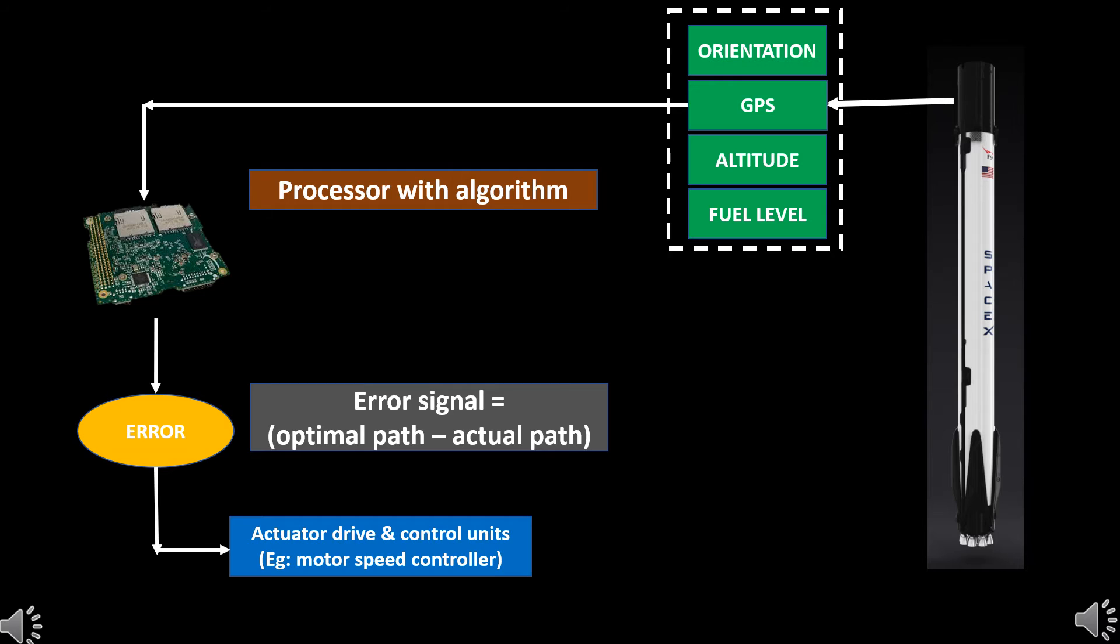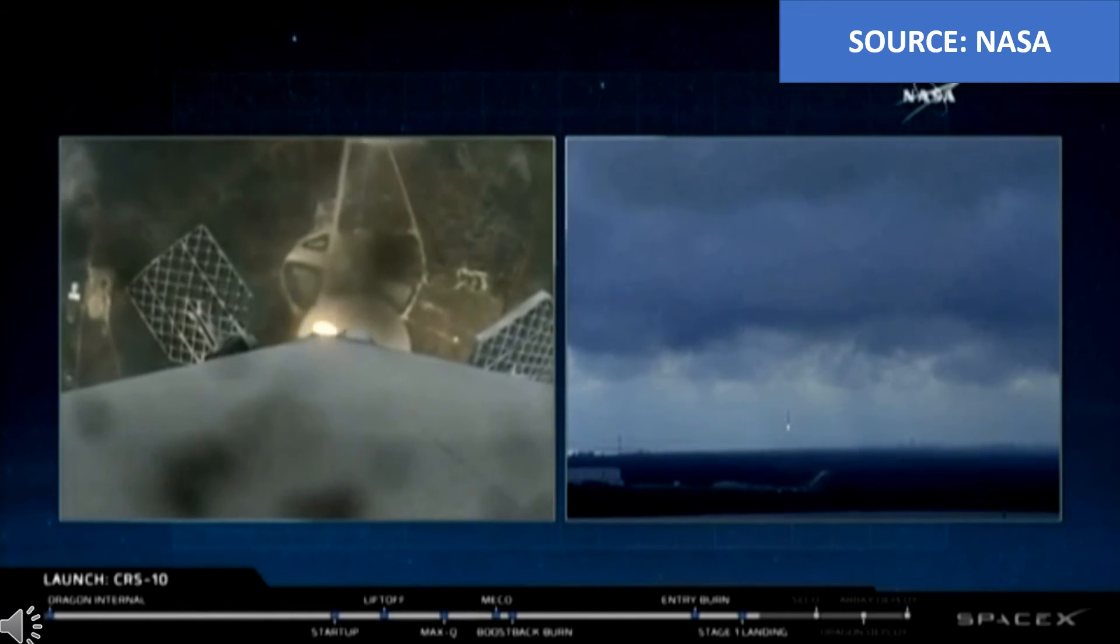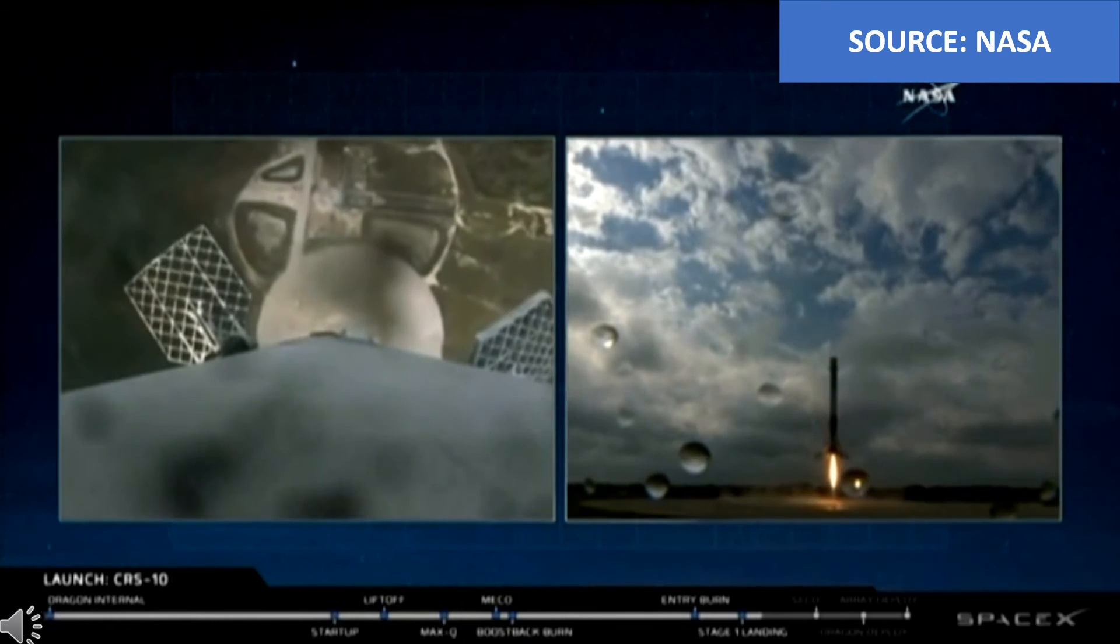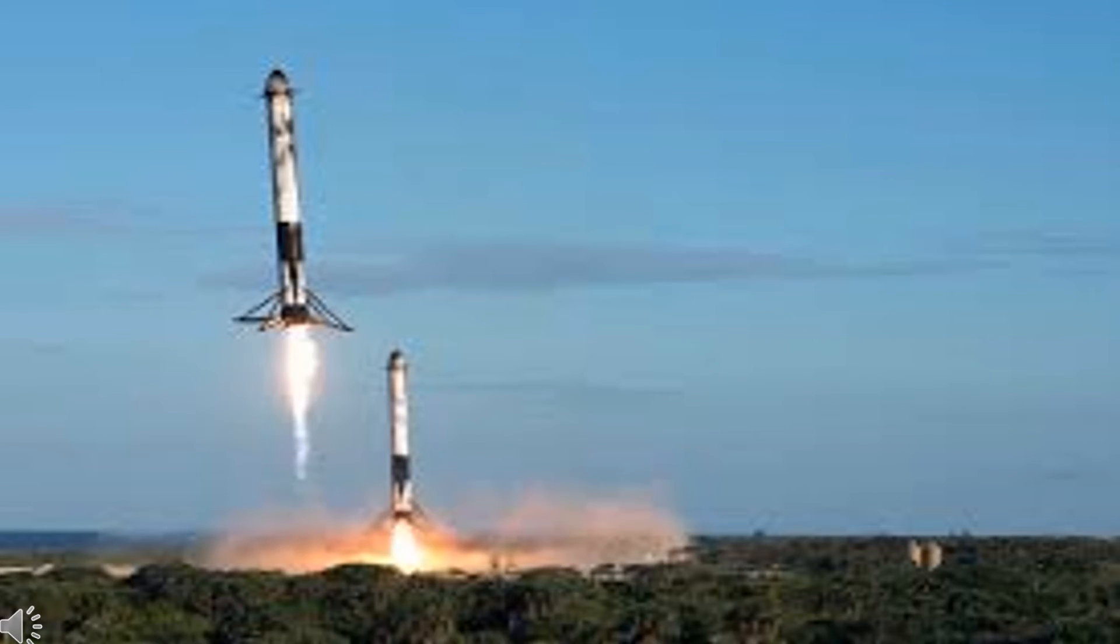The actuators like the gimbaled engine angle actuator, fin actuator, fuel flow system and ACS thrusters are actuated to control the position and the orientation of Falcon with respect to the landing platform. Again, the new position of the Falcon is given as feedback signal by the input sensors. This loop continues till the landing occurs and the distance becomes zero. Understand this is a simplified version of the Falcon control system just for understanding. In reality there will be a number of inputs and actuators.